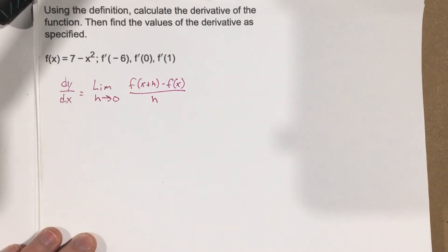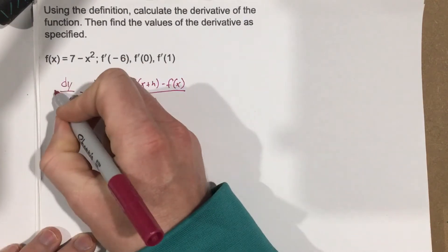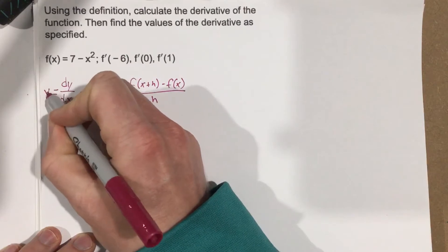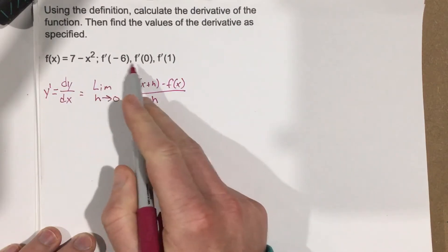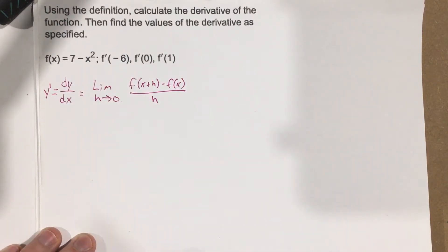dy over dx is just a way to write the derivative. The other way you can write it is y prime, or in our case f prime, which is the notation that they're using there.